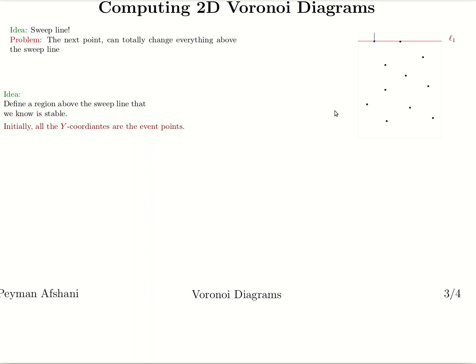This algorithm is known as Fortune's algorithm. I found a set of GIFs on Wikipedia — unfortunately there's a mistake in them that I'll mention. Anyway, we do a sweep line algorithm and we need some event points. Initially, all the event points are just the Y coordinates of the input points.